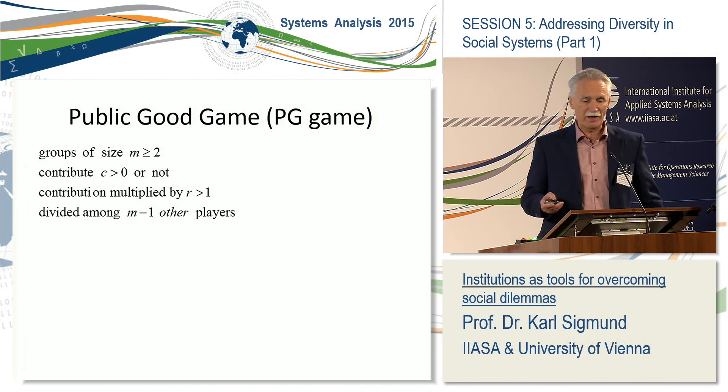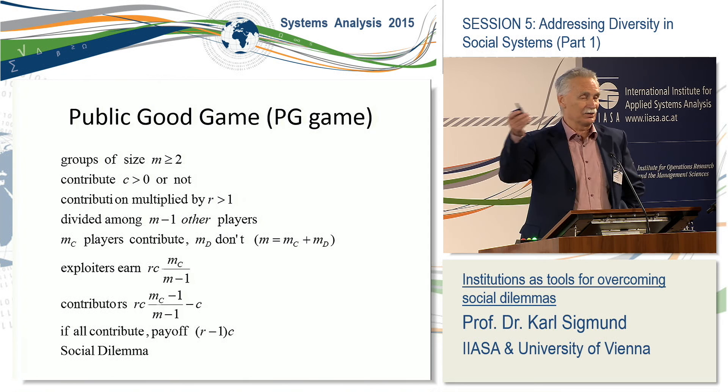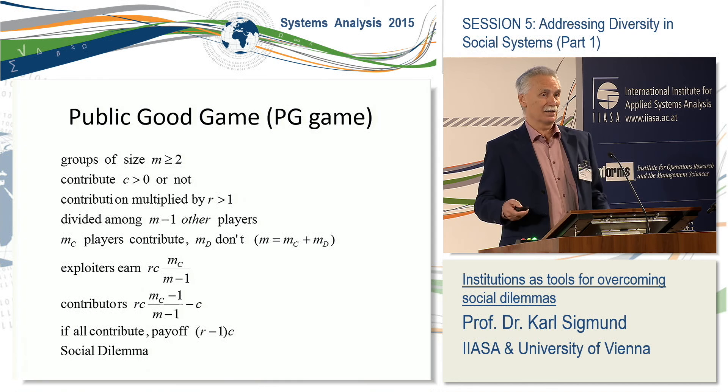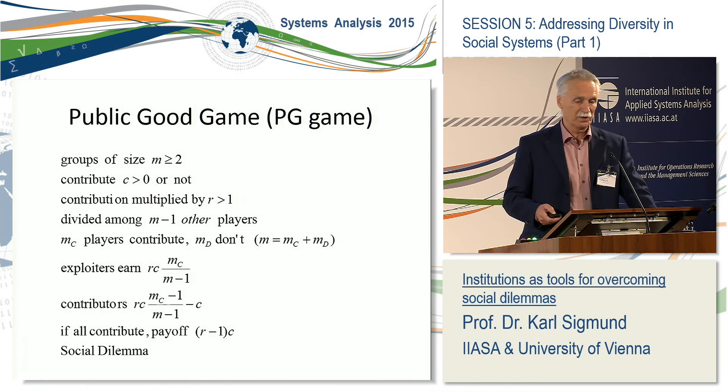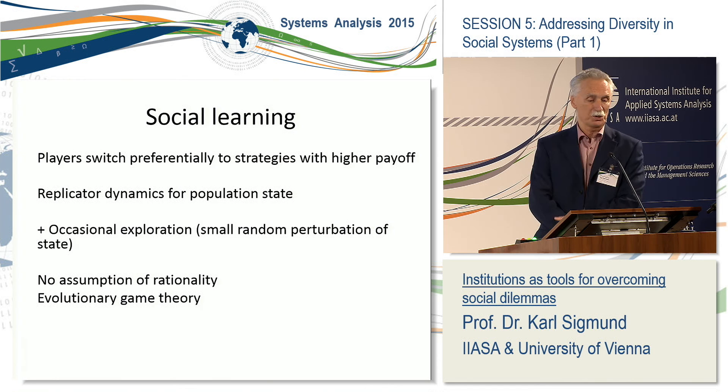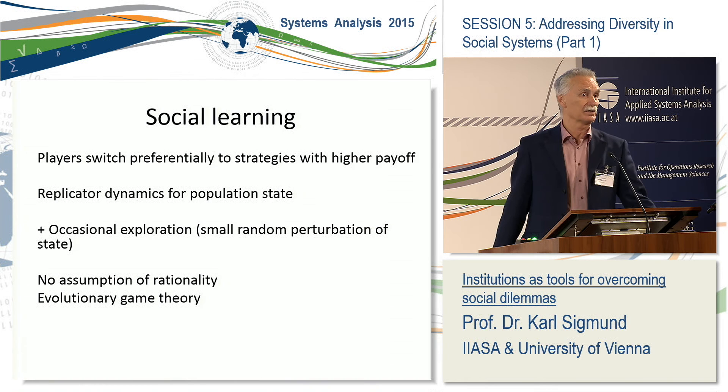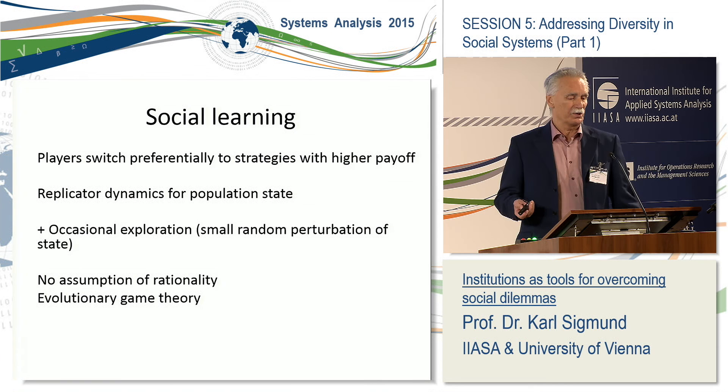This is an example of mutual help. If everyone helps, this is of course very good for the group, but it is easy to see that whenever there are players who are free riding on the others, they will do better. And if we assume that players with a higher payoff will be more likely to be imitated — if we assume there is some social learning going on — then there will be more and more free riders and eventually nobody will contribute to the public good.